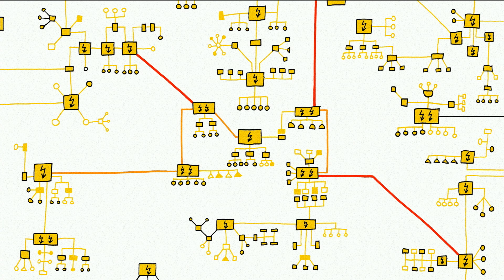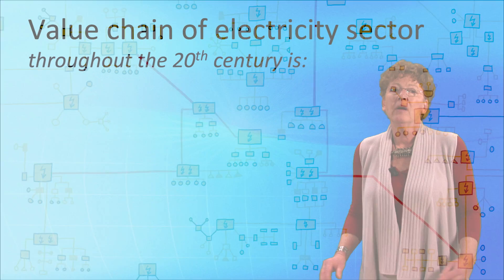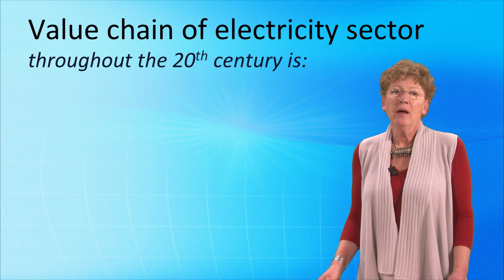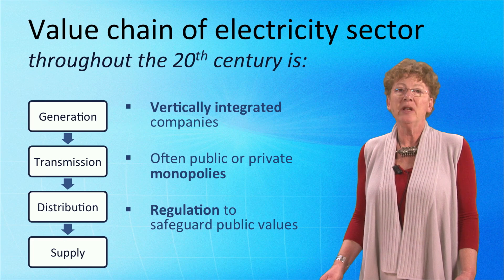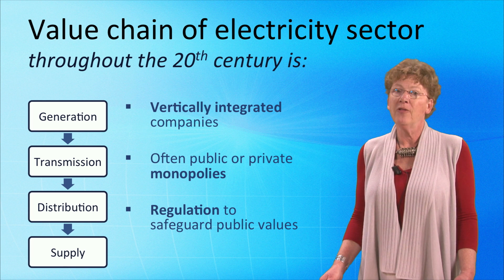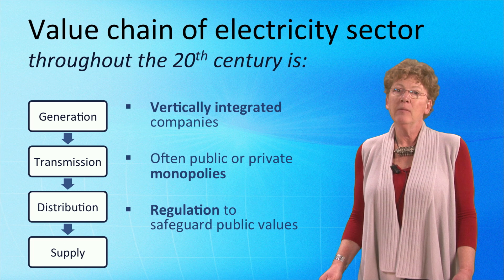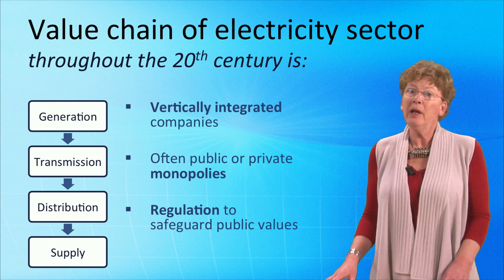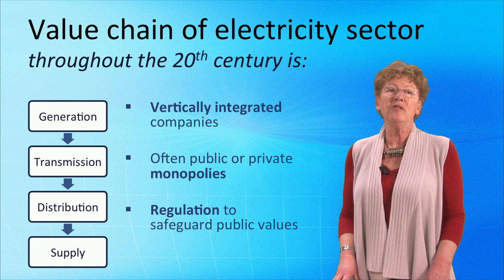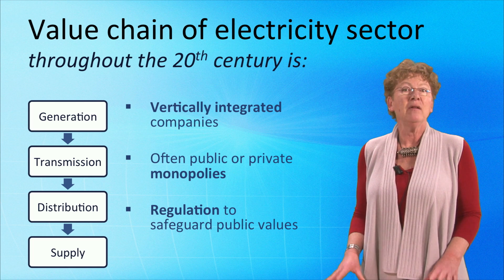Today's electricity infrastructures link these formerly separate networks into national and supranational power systems, fed by an increasingly powerful and technologically diverse array of generators. Throughout most of the 20th century, the key tasks of electricity generation, transmission, distribution and supply were concentrated within a single organization per country — a so-called vertically integrated utility. In many countries this was a public monopoly, or in the case of a private monopoly, it was heavily regulated by the government to safeguard affordability, availability, safety and other public values.